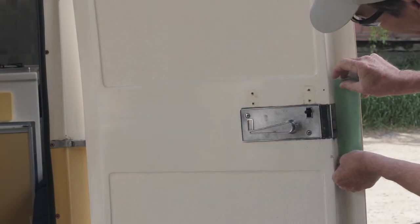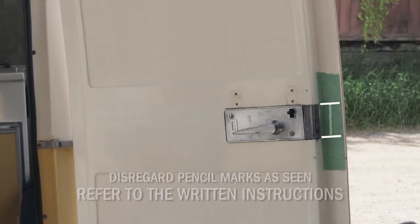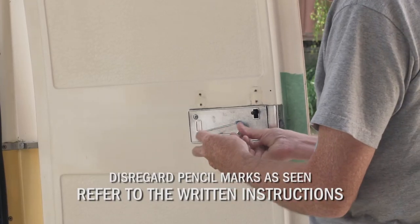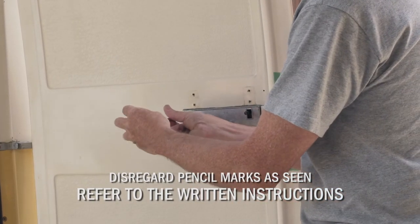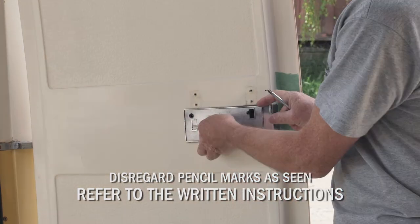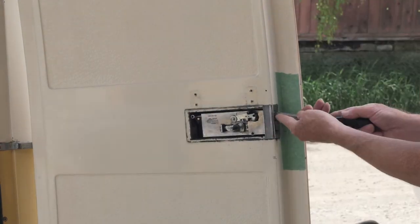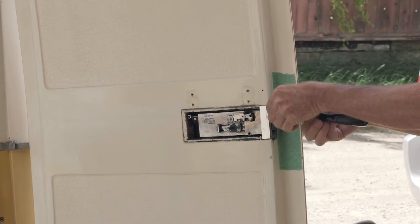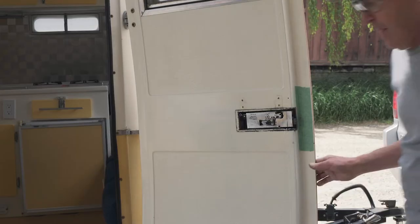Place masking tape along the edge of the door and mark the location of the latch assembly. We will refer to these marks later. Remove the two screws on the inside trim plate and the one or two screws holding the plate on the edge of the door. Then remove the inside handle and trim.